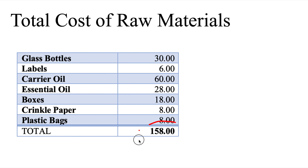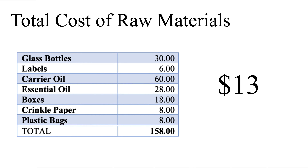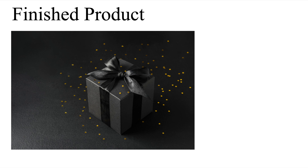The total cost of raw materials is $158, meaning that it costs roughly $13 to create each bottle of muscle ache massage oil. Now that we have the raw materials, we can begin to create the product. After the product is made, we need to figure out how much we will charge for each bottle. For simplicity, let's set the price at $60 for our final product.